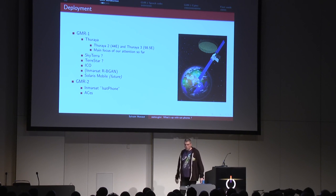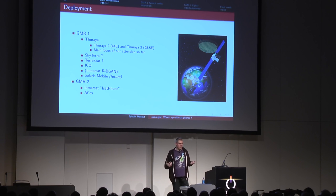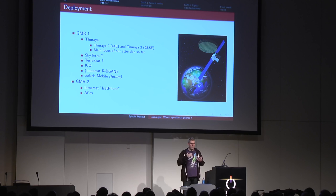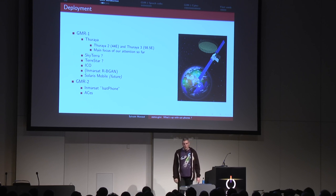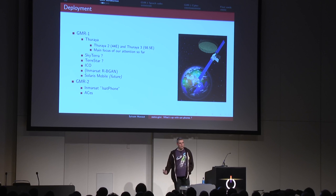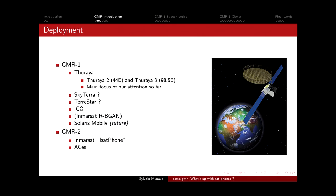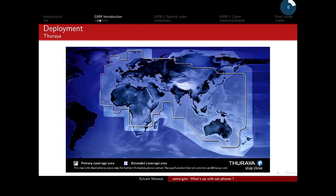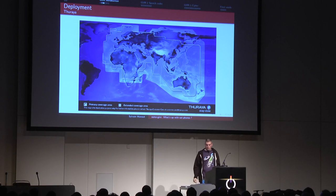Among the deployments, the one we focused on was Thuraya. The reason is that it's the most common commercial operator where you can actually buy a SIM and place phone calls. The satellites are visible from Europe, which is a requirement for me to look at the signal. This operator is mostly active in the Middle East, Asia, and Africa. In Europe you don't see too many people with satellite phones because we have GSM coverage.